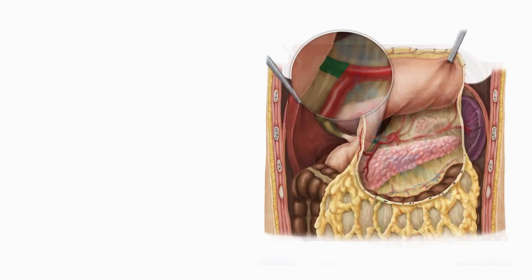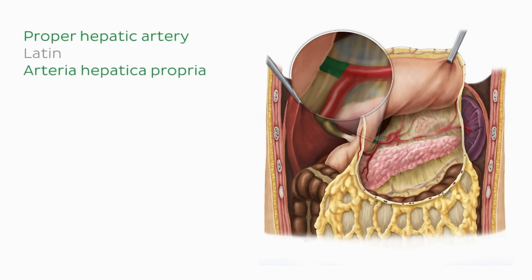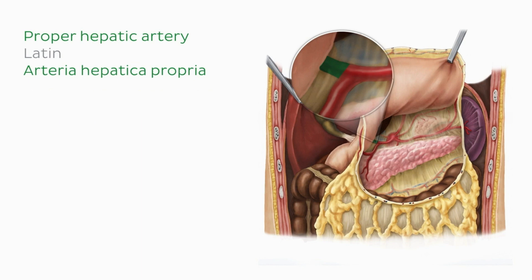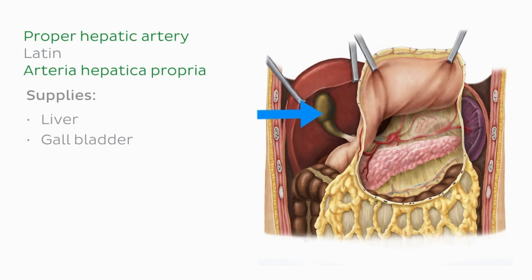Moving on to the other branch of the common hepatic artery — the proper hepatic artery. This artery arises from the common hepatic artery and runs along the common bile duct and the portal vein within the hepatoduodenal ligament, supplying the liver and the gallbladder.